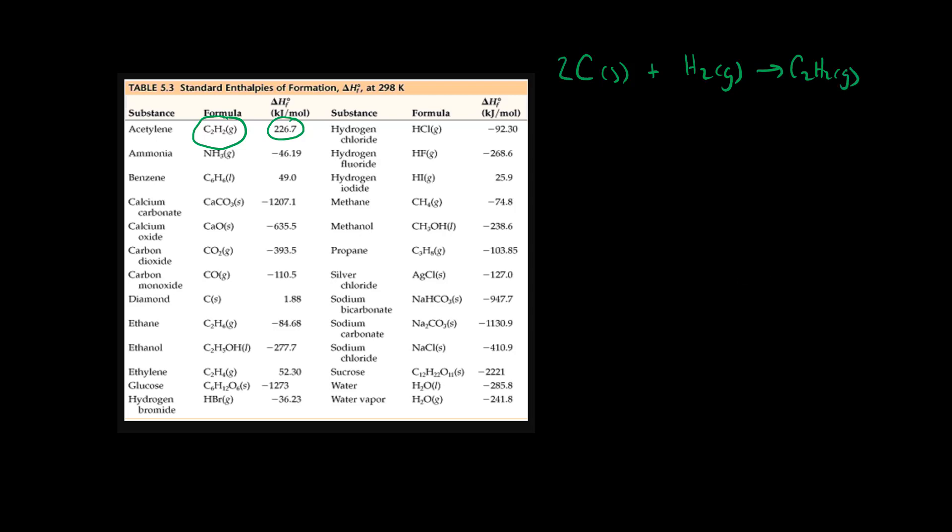In this case we need two. So this is our formation reaction that creates or forms C2H2 from its most stable elemental forms.